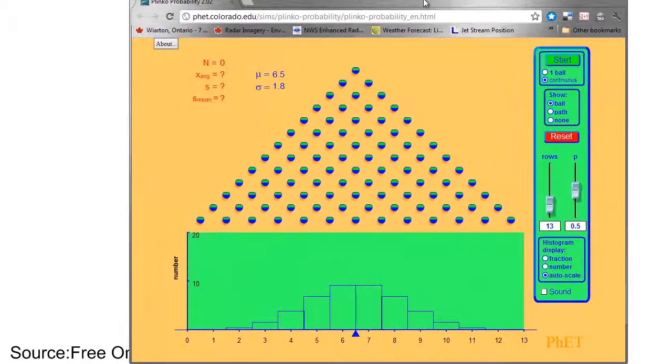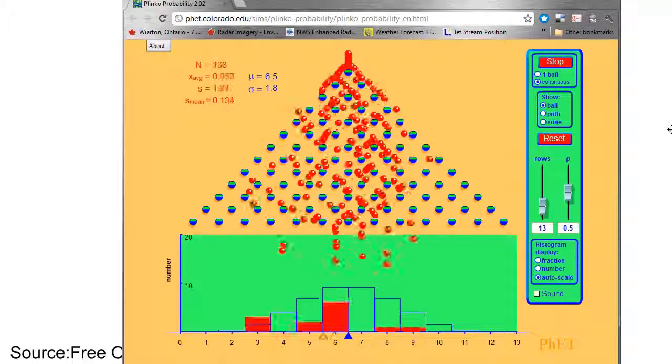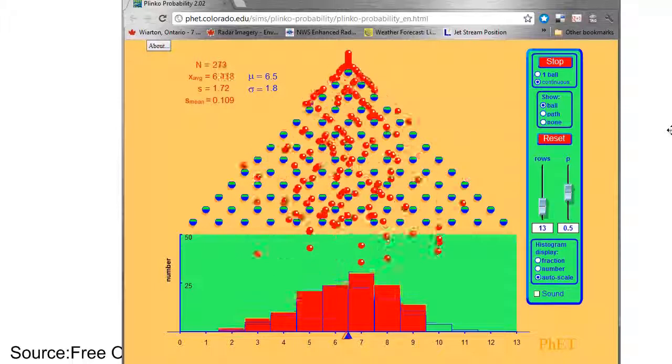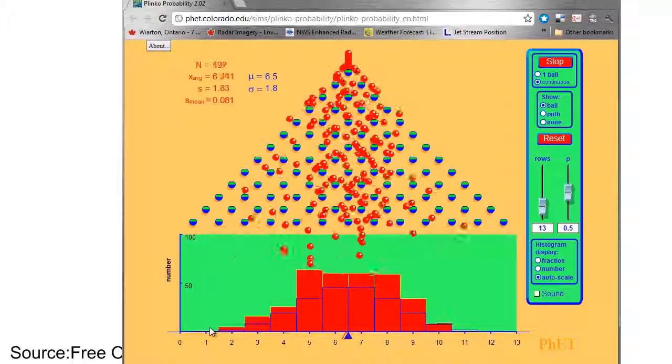The other thing of course is gambling, and you probably noticed when we were working with Plinko that the balls tended to fall towards the middle of the distribution, and a few of them would run towards the outside edge.